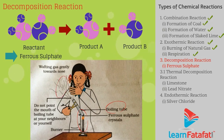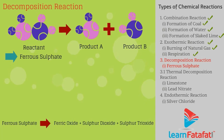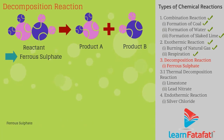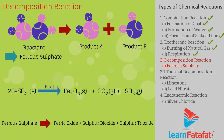Ferrous sulphate crystals lose water on heating and the crystal colour changes. The green colour crystals of ferrous sulphate change, and the compound then decomposes to ferric oxide, sulphur dioxide, and sulphur trioxide: 2FeSO4 (heat) → Fe2O3 + SO2 + SO3.